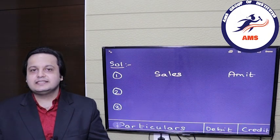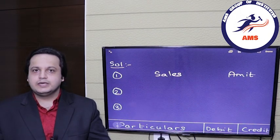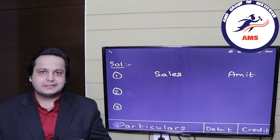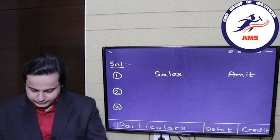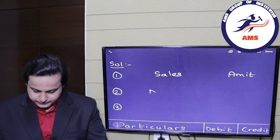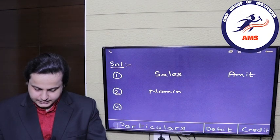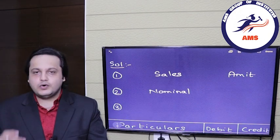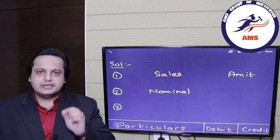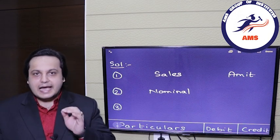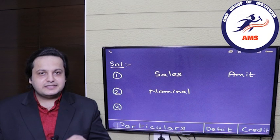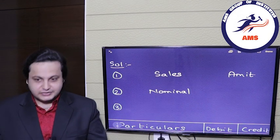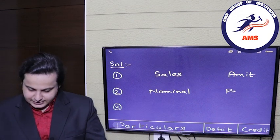Step two — identify the nature of these accounts. Sales is an income for the business, so it is a nominal account. Amit represents a person and there is creation of debt as well, so Amit is a personal account.